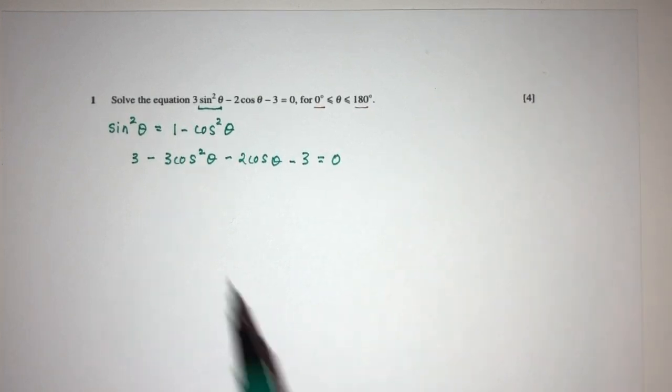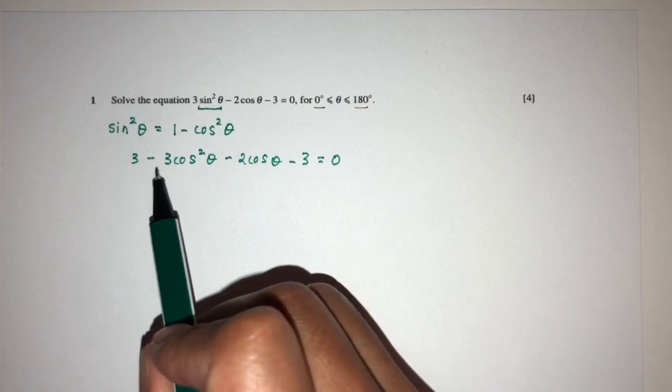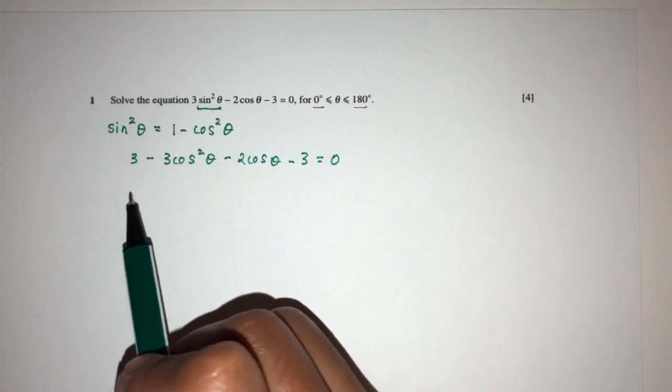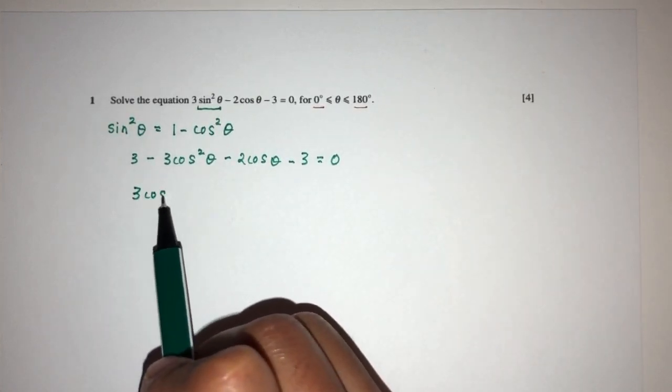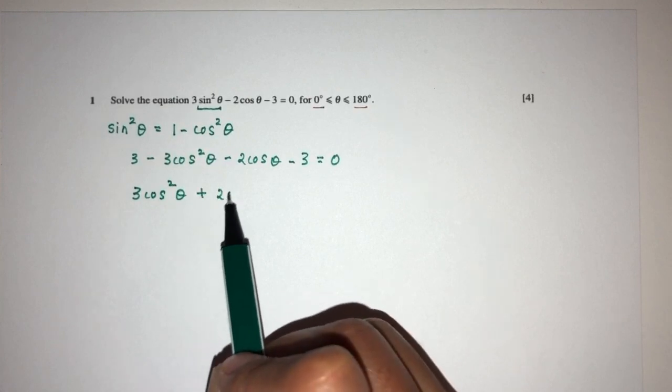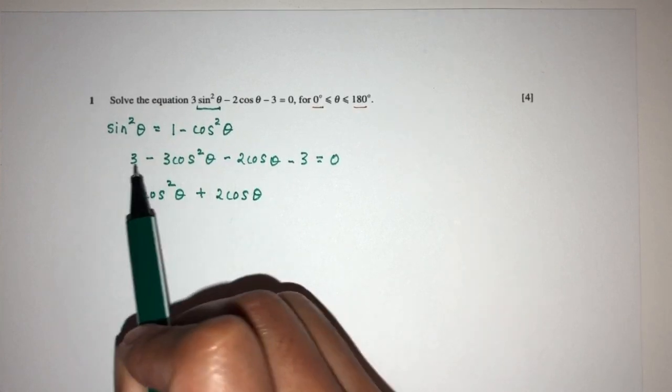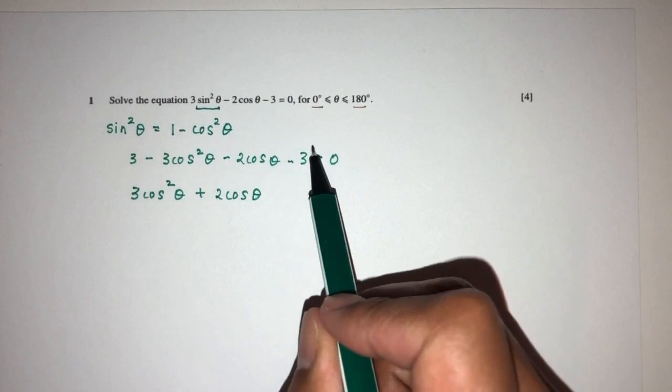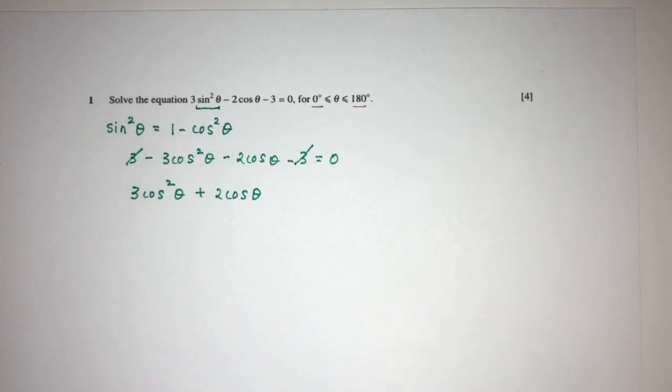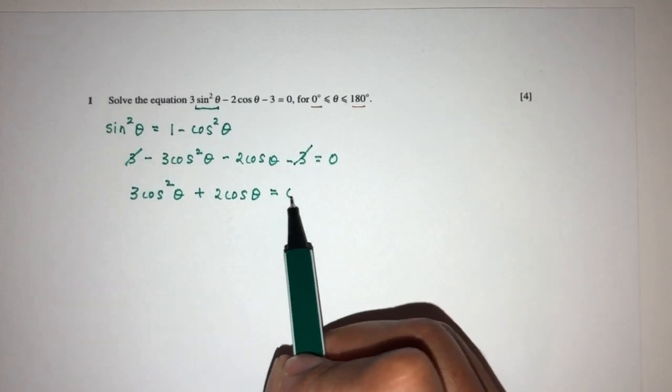minus 2 cos theta minus 3 equal to 0. Now let's try to rearrange this. Let's send everything to this side, you will have 3 cos square theta plus 2 cos theta. So here we have 3 minus 3, this will cancel out obviously, and then we have equal to 0.